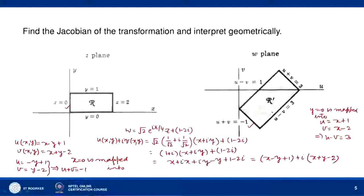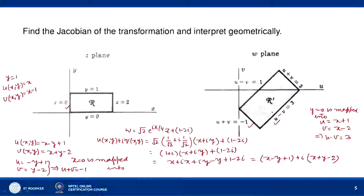When y = 1, u = x and v = x - 1, so eliminating x we get u - v = 1. So y = 1 is mapped into u - v = 1. And the image of x = 2 is u + v = 3. So we get a rectangular region again in the w-plane.